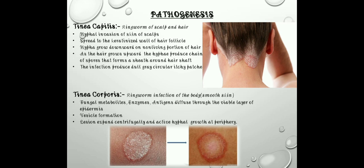The next disease is tinea corporis — ringworm infection of the body. If patches can be seen on the body, it is called tinea corporis, which is very common in humans. Fungal metabolites, enzymes, and antigens diffuse through the viable layer of epidermis. Vesicles form, then lesions expand centrifugally with active hyphal growth at the periphery, as you can see in the pictures.